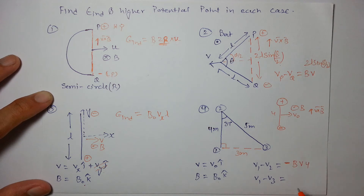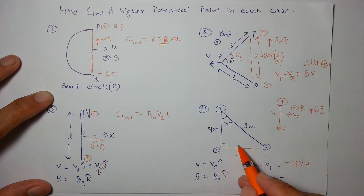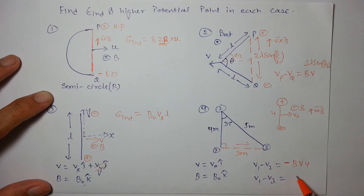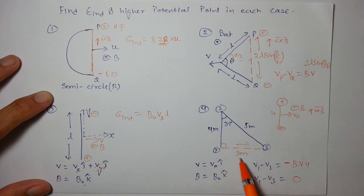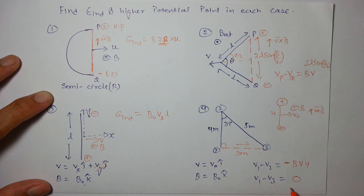For V1 minus V3: the effective length between points 1 and 3 is parallel to the velocity V₀î, so there will be no EMF induced. The net EMF between V1 and V3 is zero.